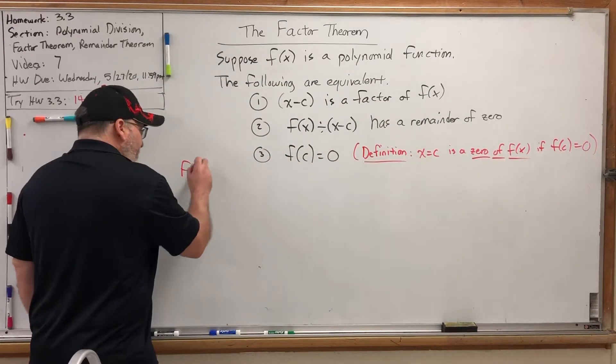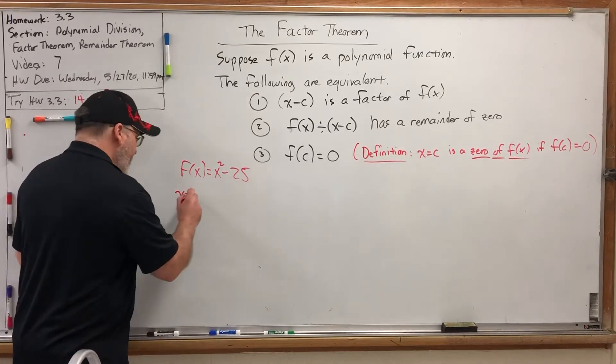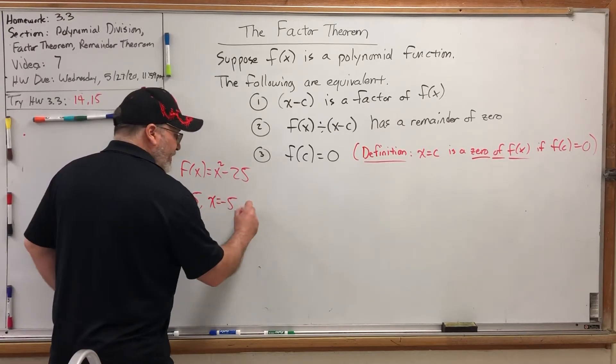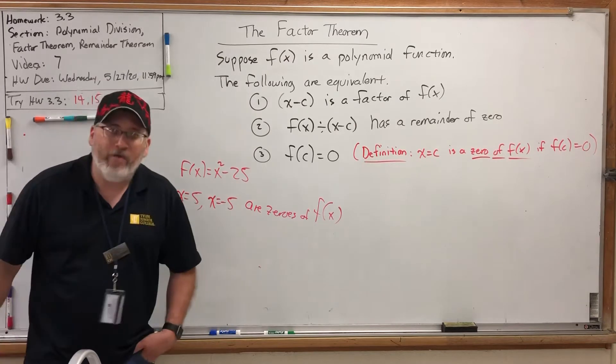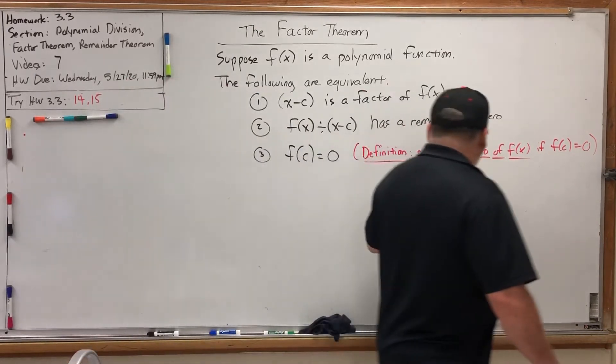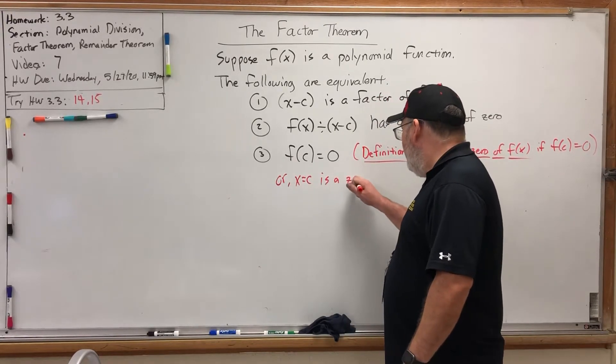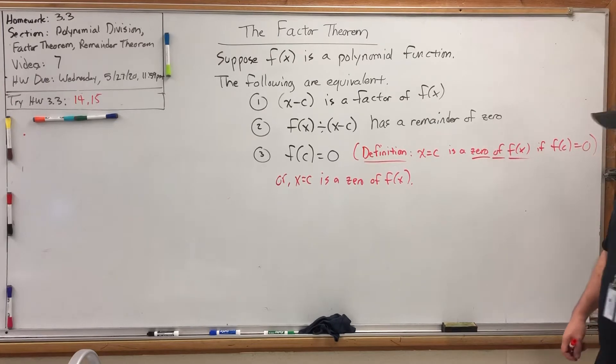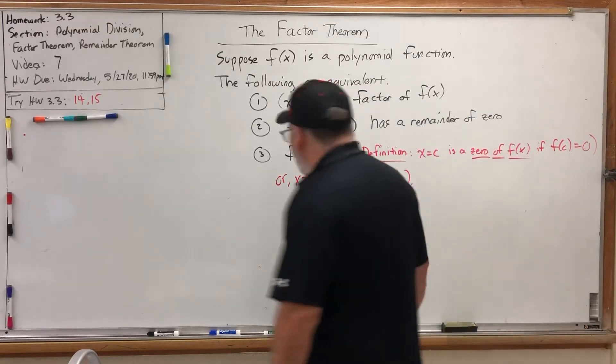Real quick example. F(x) equals x squared minus 25. One number you can put in, it comes out zero. Five. Do you know the other? Negative five. X equals five and X equals negative five are zeros of F(x). Because if I put five in, it comes out zero. If I put in negative five, it comes out zero. So the third statement is equivalent to saying that F(c) is equal to zero, or X equals c is a zero of F(x). So I guess you could call it a four-way equivalency, but really this is just the definition of that.